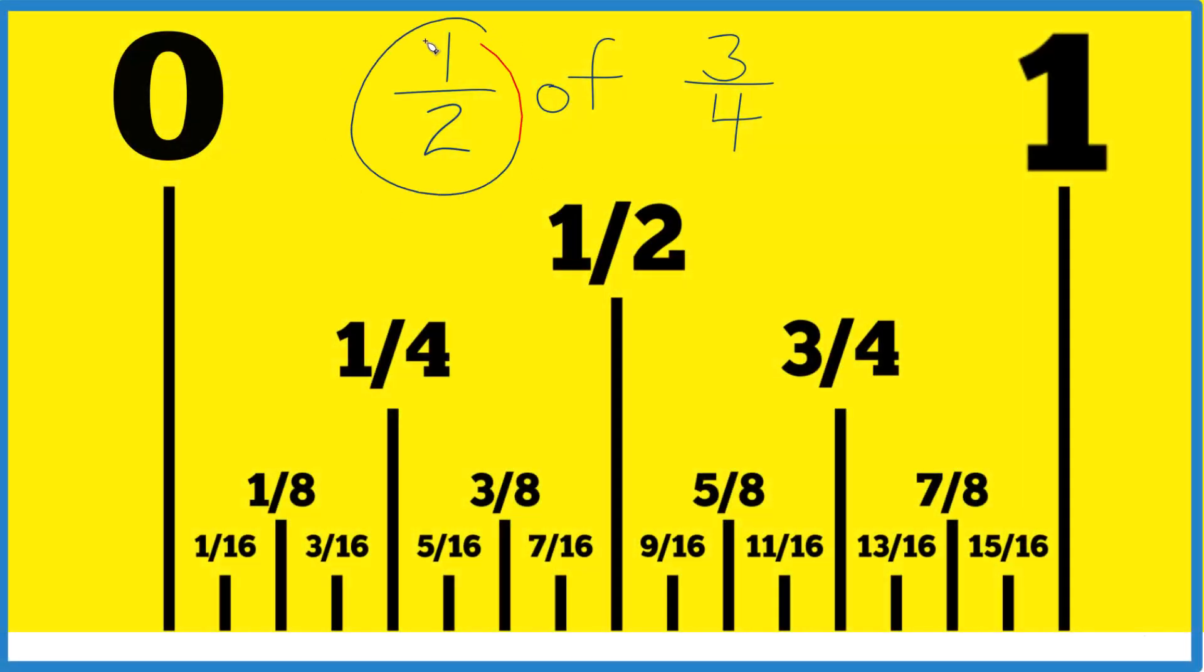Let's find one-half of three-fourths on our ruler or tape measure. If we have one inch right here, right down the middle is one-half. We cut that in half again, we get one-fourth. So we have one-fourth, two-fourths, and right here, that's our three-fourths.